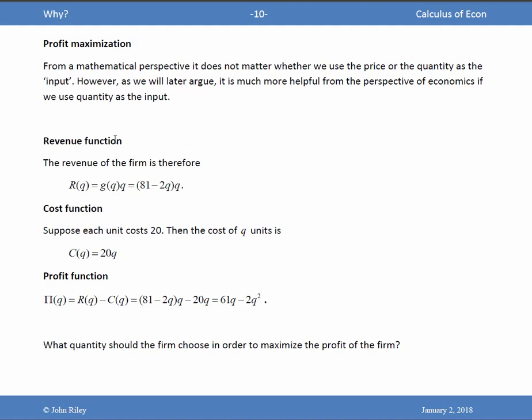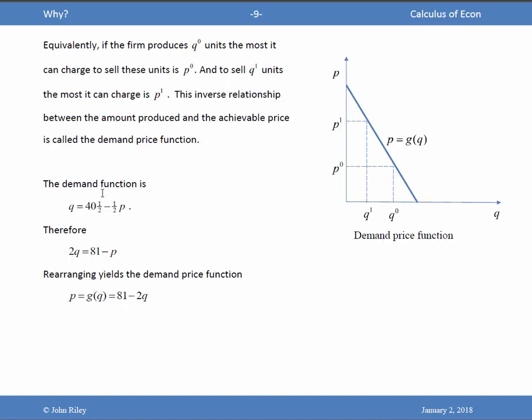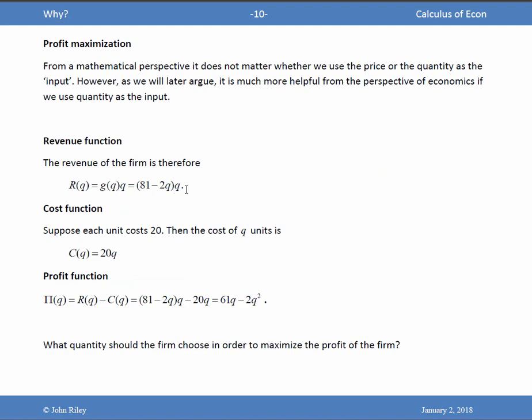Let's talk about revenue. Revenue is a function of the output. It's the quantity times the price. The price is 81 minus 2Q. So there is the revenue. We haven't mentioned cost yet. Assume that each unit costs 20 to make. Then the cost of Q units is simply 20Q.